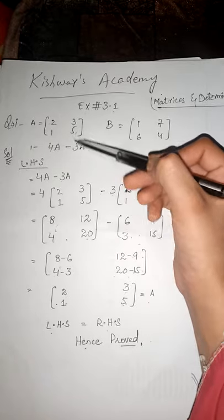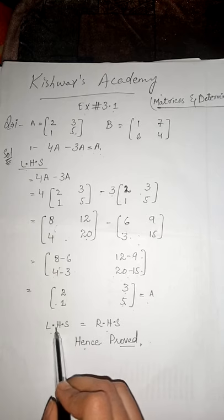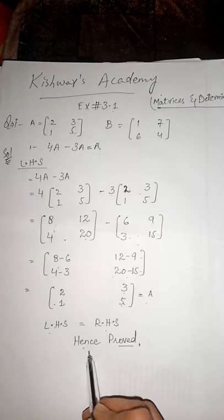Who equaled? He gave us value in this question. He said that A equaled 2, 3, 1, and 5. Same. Now left hand side is equal to right hand side. Hence proved.